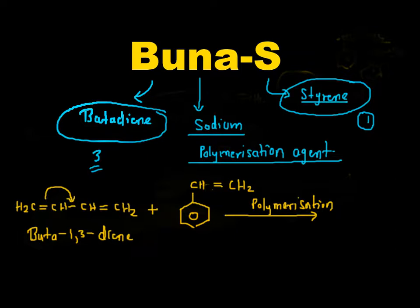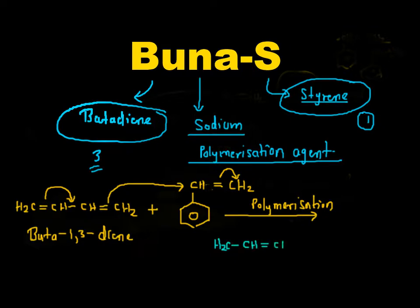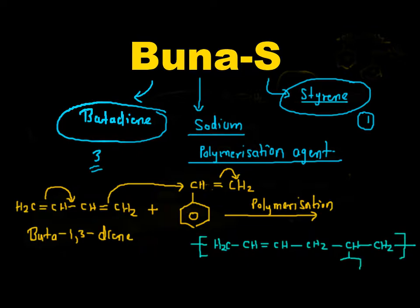In this way the polymerization takes place, and we'll finally have the Buna-S polymer. Let's draw the structure: H2C — CH=CH — CH2 — CH — CH2, and here is the phenyl group.